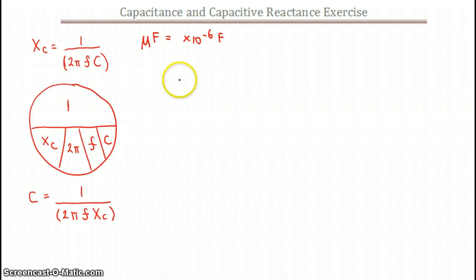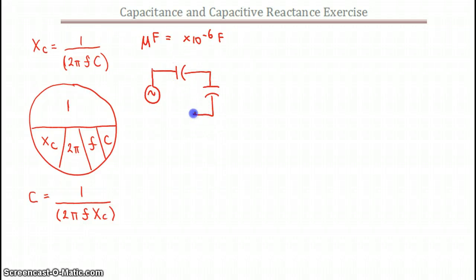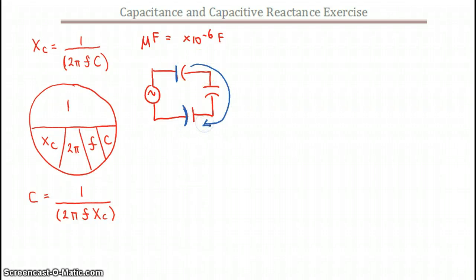The other equations we need are for series and parallel connections. If we have a number of capacitors that are in series, then we've changed one of three things: we've either changed the size of the plates, the type of dielectric, or the distance between the plates. When they're drawn out like this, from plate to plate, we've increased the distance where the electrons have to charge up on the first capacitor, rip off and go to the second capacitor, and then finally to the third. So essentially what we've done is we've increased the distance between the plates.